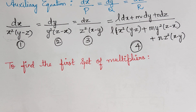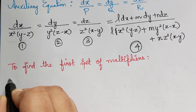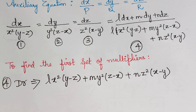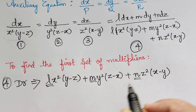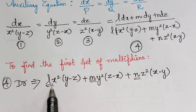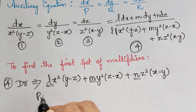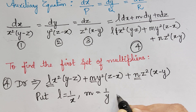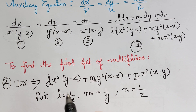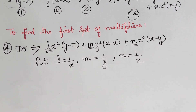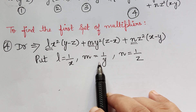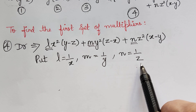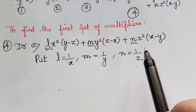To find the first set of multipliers, we take the denominator of the fourth ratio. We make the choice of values L, M and N such that the denominator becomes zero. Observing the terms, we put L equal to 1 by x, M equal to 1 by y, and N equal to 1 by z. When we do so, the terms can be cancelled easily. The idea of choosing the multipliers comes purely by practice, and going through previous problems under this topic will help you plan how to choose them.